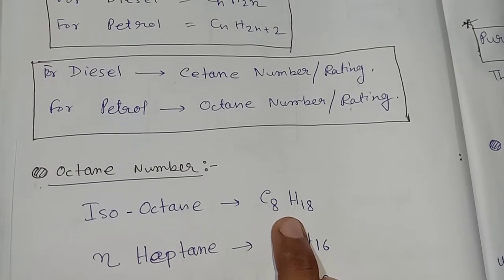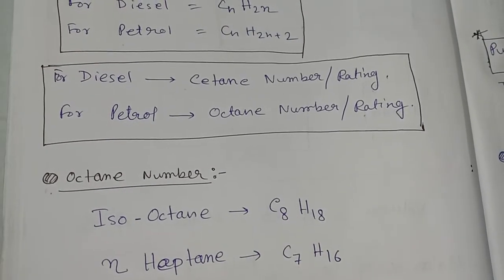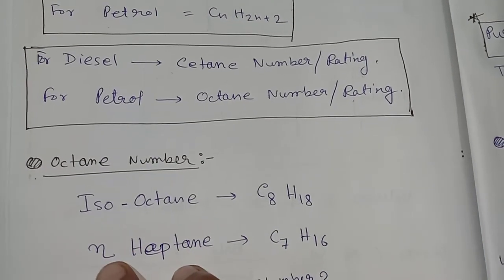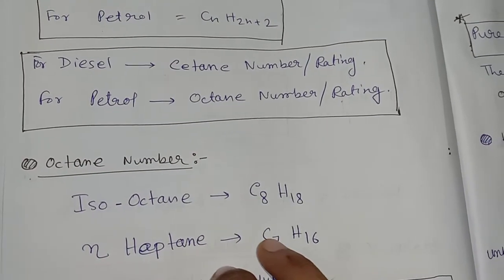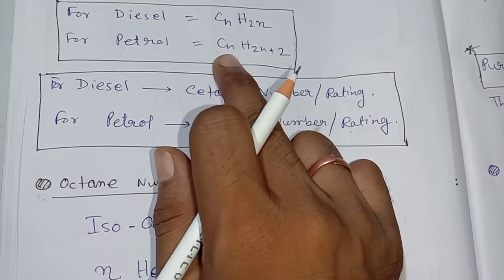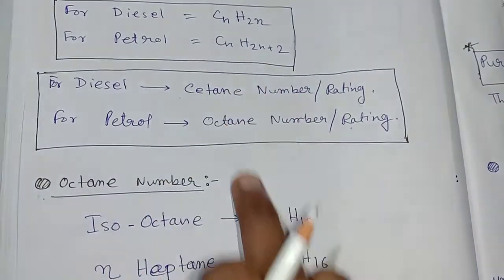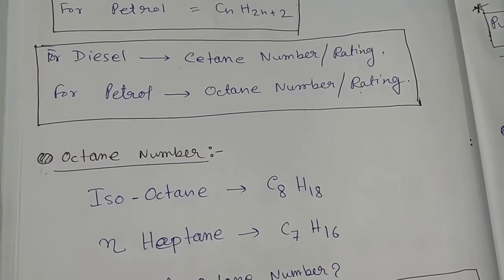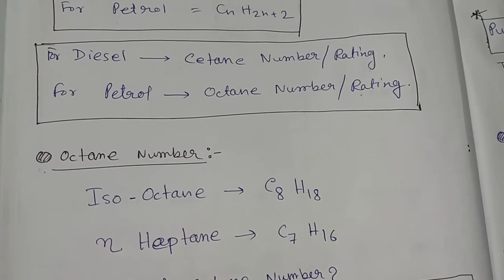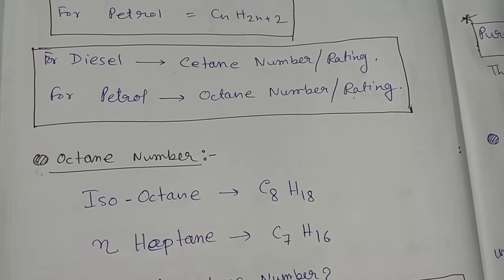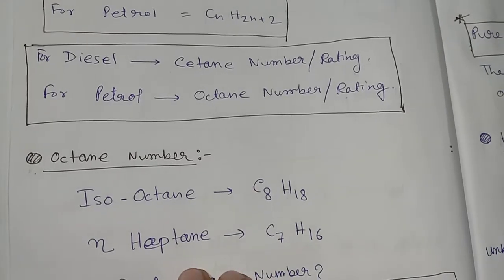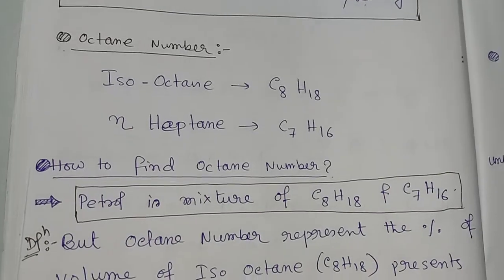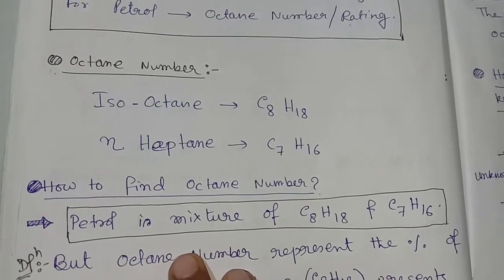Normal heptane is C7H16. If you put N equals 7 in the formula CNH2N+2, you get C7H16. So if we assume a fuel is a mixture of isooctane and normal heptane, we can define the octane number based on that mixture.